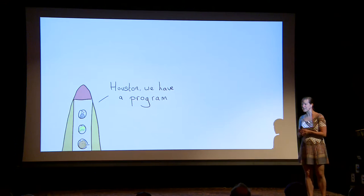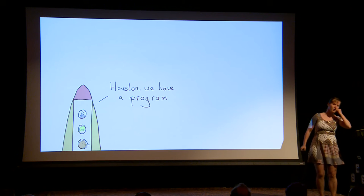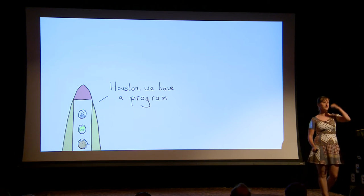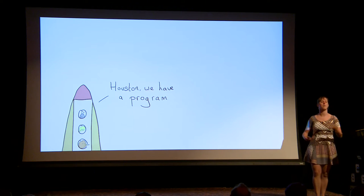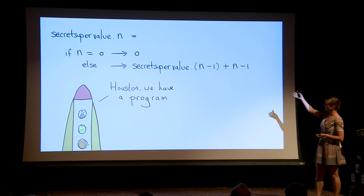Ta-da! Houston, we have a program. You see how there was no real thinking involved — I wasn't thinking 'a for loop, what should go in it?' It was just step by step. I have derived a program. So if I want to calculate my secret super value: if n is 0, I'm giving 0; and otherwise I do a recursive call to the value 1 below me plus the value 1 below me.